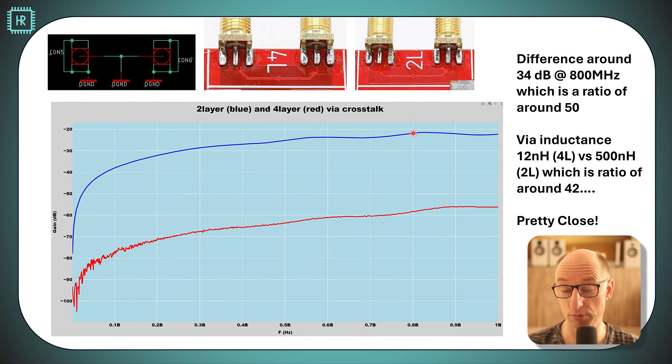The loss at 800 megahertz is something like 22 decibels. So that means at 800 megahertz this VIA only suppresses 22 decibels. The four layer however suppresses far more, it's around 58. Now I checked the difference, that's around 34 decibels which is a ratio of 50. What we saw on the graph was 12 nanohenries versus 500 nanohenries which is a ratio of 42, so this VIA modeling is pretty accurate.